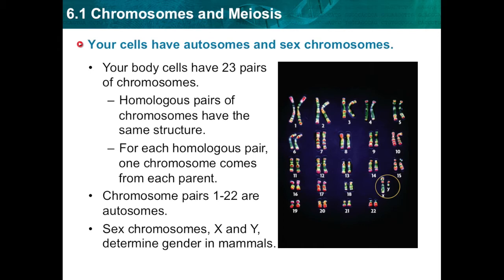Each pair of chromosomes is called a homologous pair. Homologous means having the same structure. Homologous chromosomes are two chromosomes — one from the mother and one from the father — that are the same size and have copies of the same genes. Although each chromosome in a homologous pair has copies of the same genes, the two copies may be different. For example, each chromosome in a pair might have a gene that influences eye color, but the gene on one chromosome may lead to brown eyes and the gene on the other may lead to green eyes.